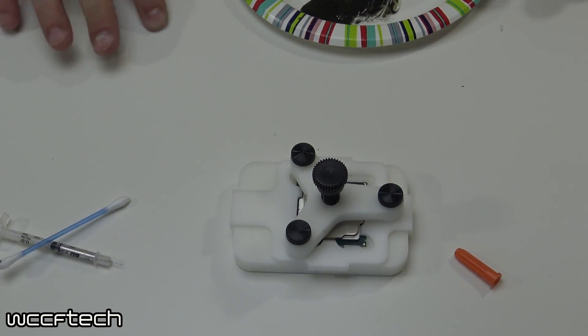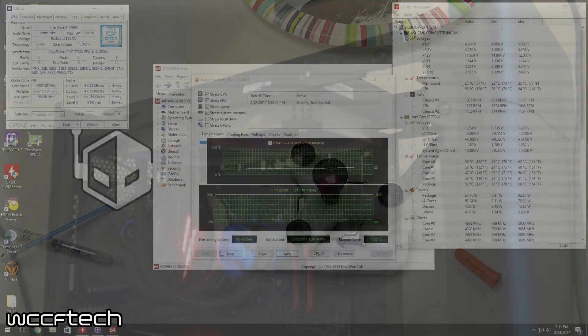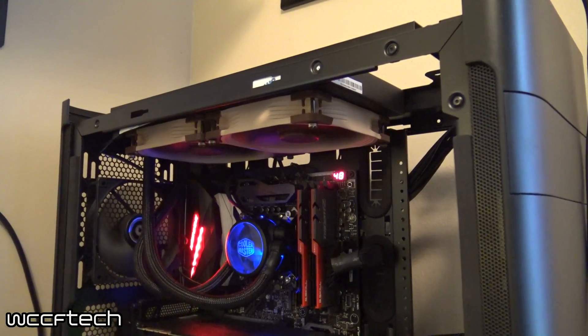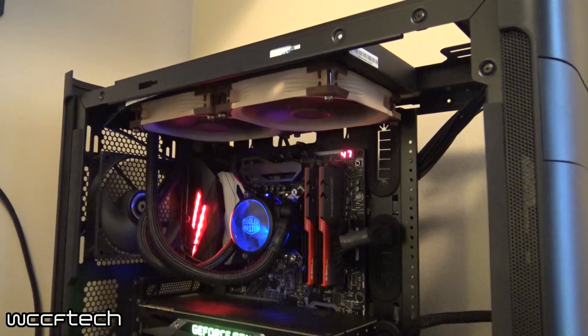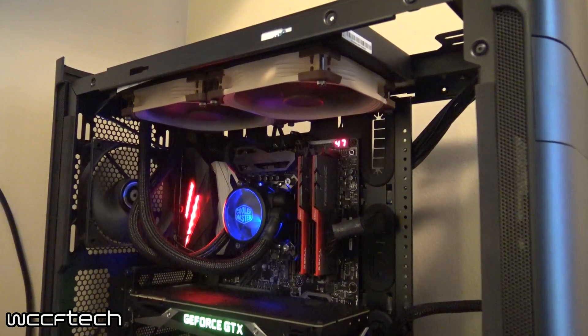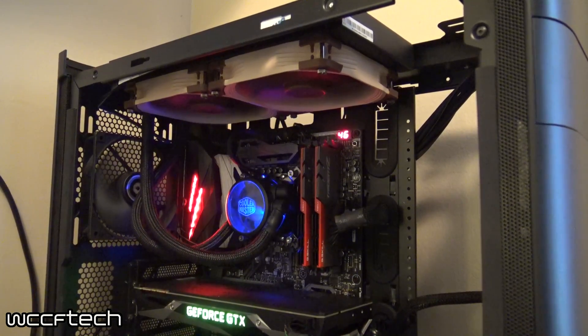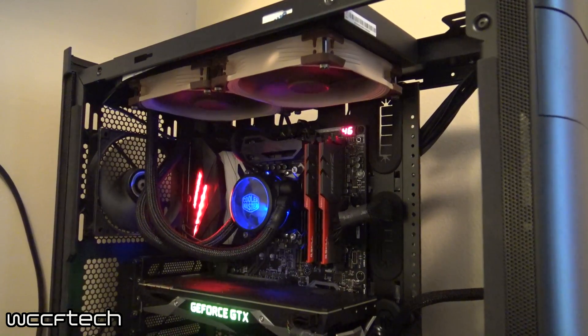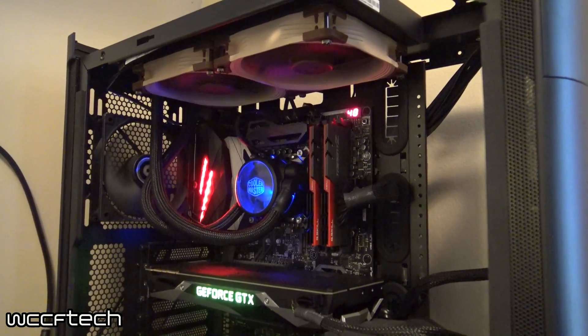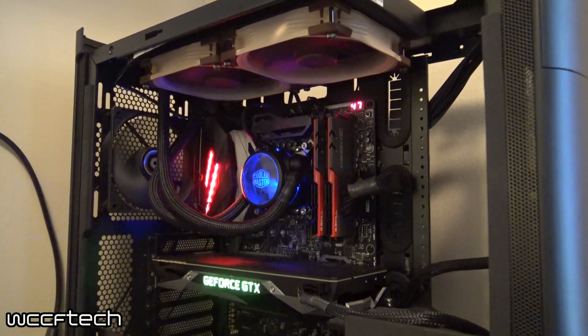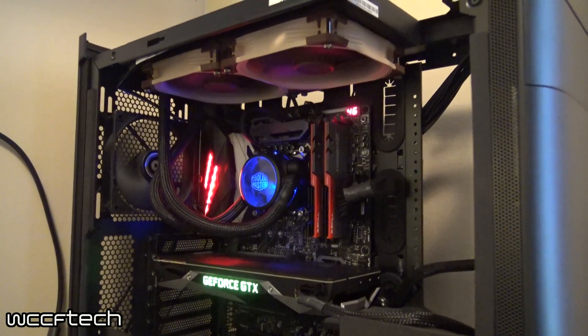All right, so now that we've got the CPU back together and back in the computer, just want to take a quick look at the equipment that we're using. We've got the Be Quiet Phoenix Shogun case that we took a look at recently. Now I do have both side panels off as well as the top cover so that there's no restrictions on the cooler, so that we can take a look at basically just the cooler and the CPU to see how they perform.